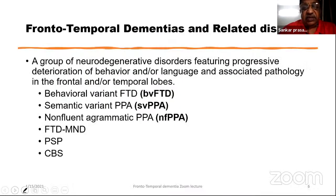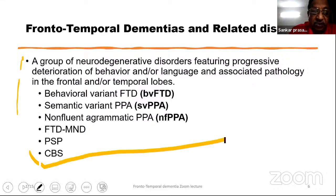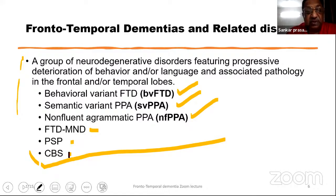Related disorders closely associated with FTD include behavioral variant FTD, semantic variant PPA, non-fluent agrammatic PPA, FTD-MND, progressive supranuclear palsy (PSP), and corticobasal syndrome (CBS). These conditions are all studied under the frontotemporal dementia spectrum because they share common pathophysiological features. They involve progressive deterioration of behavior and language with associated pathology in the frontal and anterior temporal lobes.